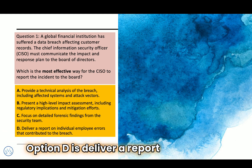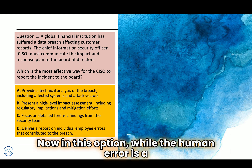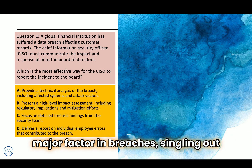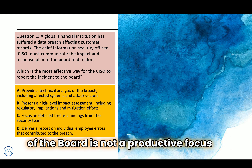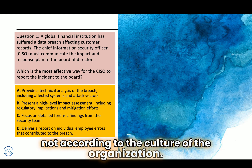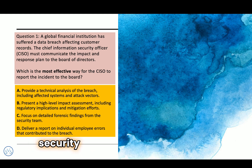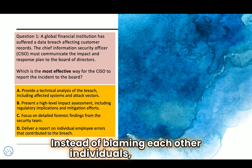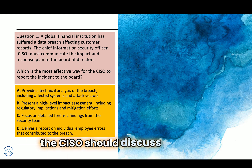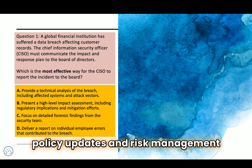Option D: deliver a report on individual employee errors that contributed to the breach. While human error is a major factor in breaches, singling out employees in front of the board is not a productive focus and is not in line with organizational culture. The focus should be on systematic issues, security improvements, and how to prevent future breaches. Instead of blaming individuals, the CISO should discuss enhanced security training, policy updates, and risk management strategies.